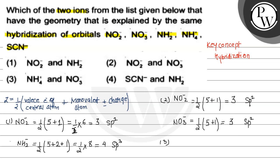Third option: NH₄⁺. Half the number of valence electrons of the central atom nitrogen, plus 4 monovalent atoms, minus 1 for the positive charge. That gives 5 + 4 − 1 = 8, and ½ × 8 = 4. So the hybridization of NH₄⁺ is SP3. The second species here, NO₃⁻, was already calculated — its hybridization is SP2.